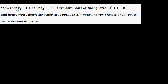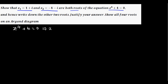We need to show that z1 = 1+i and z2 = -1-i are both roots of the equation z⁴ + 4 = 0. The first step is to write the equation: z⁴ + 4 = 0, which implies z⁴ = -4. Now, how would you write -4 in polar form?